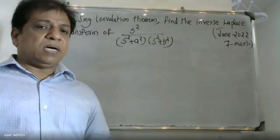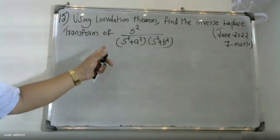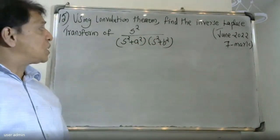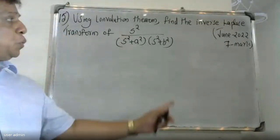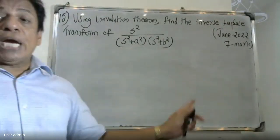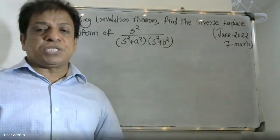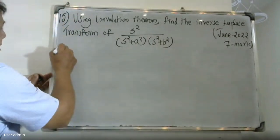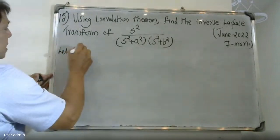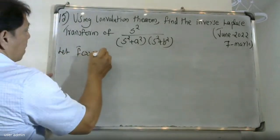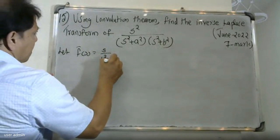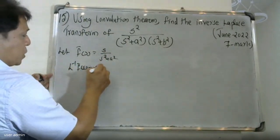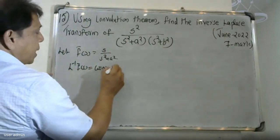Good morning students. The question is: using the convolution theorem, find the inverse Laplace transform of s² divided by (s² + a²) into (s² + b²). Let F̄(s) = s / (s² + a²).